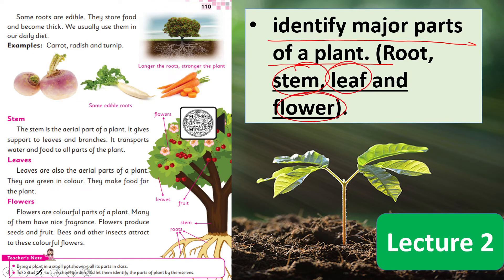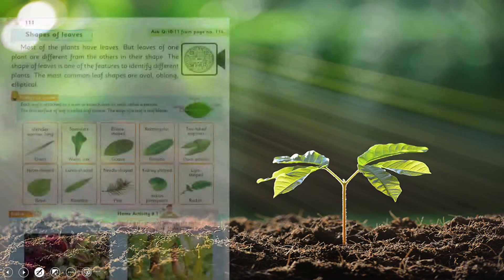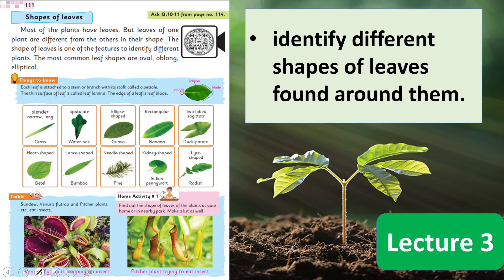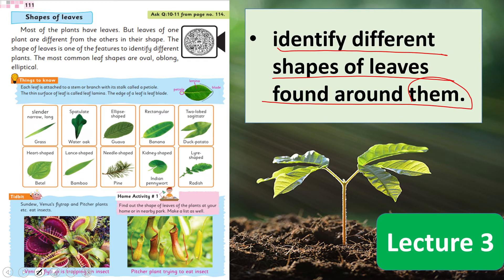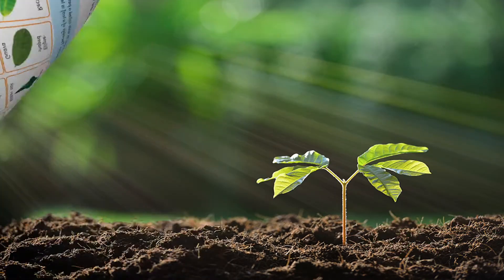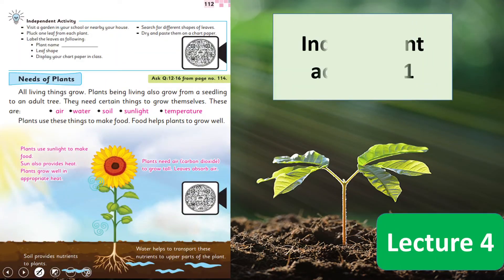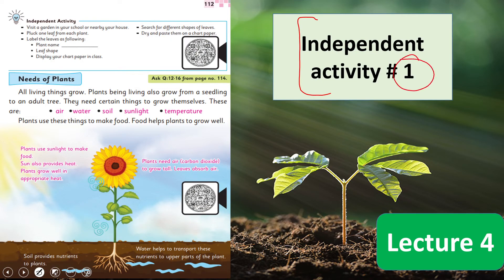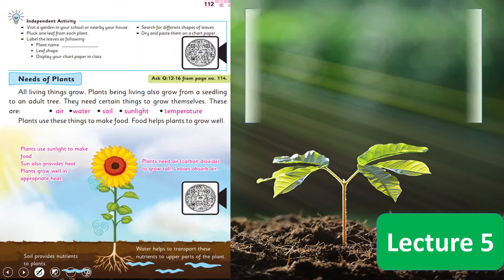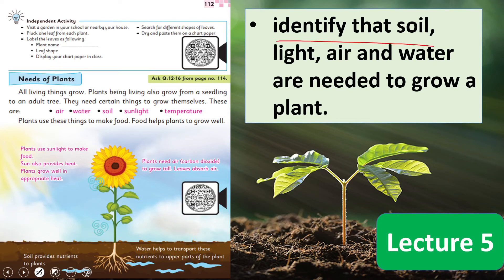In Lecture number 3, students will be able to identify different shapes of leaves found around them. Bachche jo hain, leaves ki different shapes jo hain, wo identify kar sakenge is lecture mein. In Lecture number 4, students will do an independent Activity number 1, given on page number 112.